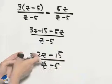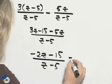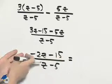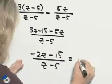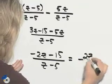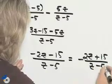We have a negative and a negative, which typically we don't want to leave a large amount of negatives in the problem. So we can divide out a negative 1 in front, and so we'll have 2z plus 15, all over z minus 5.